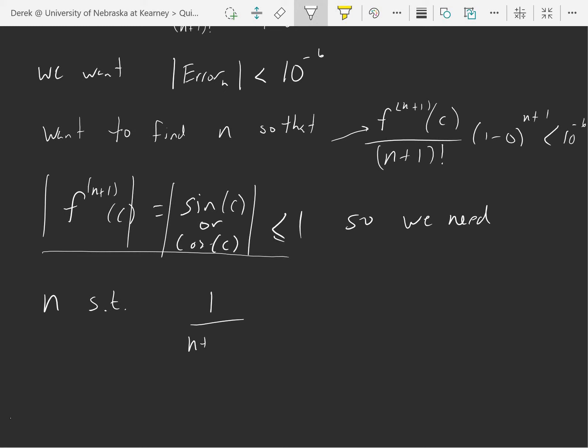So that 1 over n plus 1 factorial is less than 10 to the negative 6th. I.e., we need n plus 1 factorial bigger than 10 to the 6th, so I'm going to have to figure out which factorials I'm going to need.